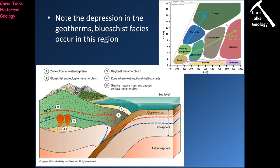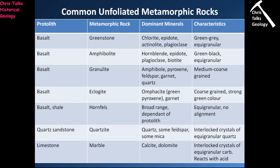These high-pressure, low-temperature conditions produce a very distinct sequence of minerals. You get minerals like kyanite and glaucophane appearing - these minerals only tend to occur in subduction metamorphic settings because they only form under high-pressure, low-temperature conditions. Now that we've covered the three types of metamorphism, let's think about some unfoliated and foliated metamorphic rocks.